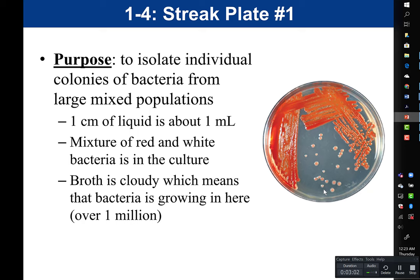When determining if a streak plate is successful, isolation does not have to happen in quadrant four. In some cases you might see isolation in quadrant three, meaning you have less bacteria there and quadrant four has nothing — that is still considered a successful streak plate because you still got isolation and were able to isolate different types of bacteria. It doesn't matter which quadrant has isolation.